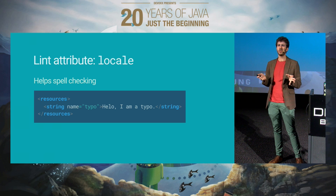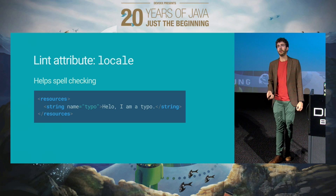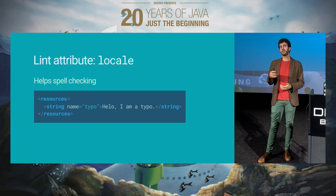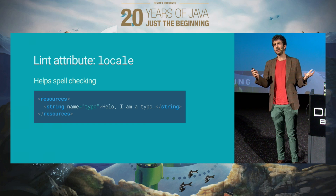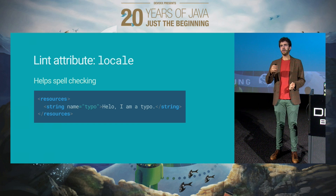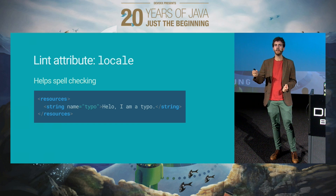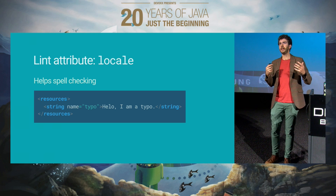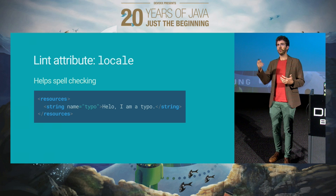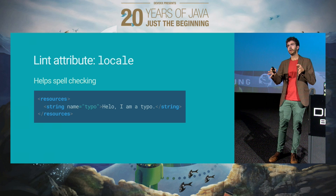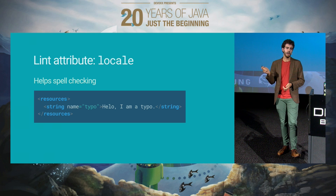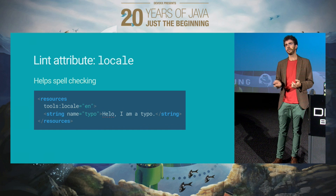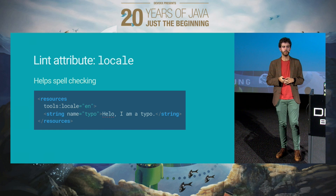Next one is the locale attribute. The locale attribute specifies which is the locale of the string resources that you're including in a given file. The only real use I could find for it is to disable the spell checker if you have your default strings in a language that is not English. For instance, I might have an application that is in Italian, and all the string resources in the default values folder are in Italian, so the spell checker will light up like a Christmas tree. By just adding a locale, you would tell it not to consider those errors.